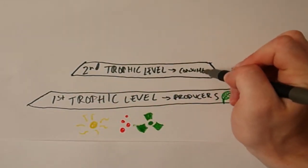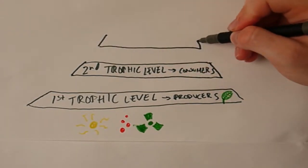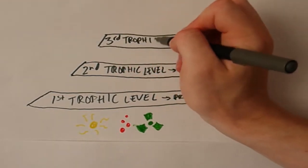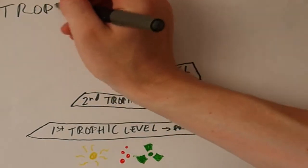You can then have another trophic level, that is higher up consumers feeding on those consumers, and you can even have another trophic level after that if you want. This is called the trophic pyramid and it's a pretty good way of describing an ecosystem.